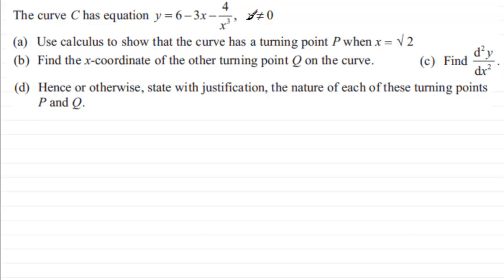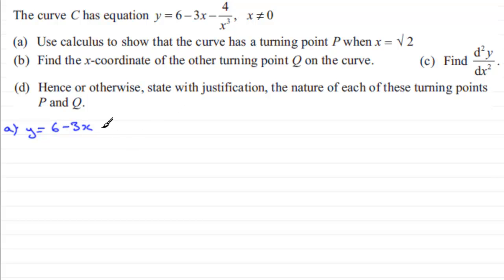We're going to differentiate y with respect to x. Starting with y equals 6 minus 3x, the term minus 4 over x cubed needs to be modified. This is the same as minus 4 times 1 over x cubed. Since 1 over x cubed is x to the power minus 3, we end up with minus 4 multiplied by x to the power minus 3, which we can now differentiate.